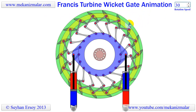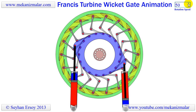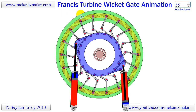In my top view of a Francis turbine animation video, I described the wicket gates in a very crude way. The wicket gates control the amount of water passing through the turbine, which in effect controls the power output. If the power requirement in the grid is low, the wicket gates narrow the water passage and reduce the power output, while preventing excessive water usage.